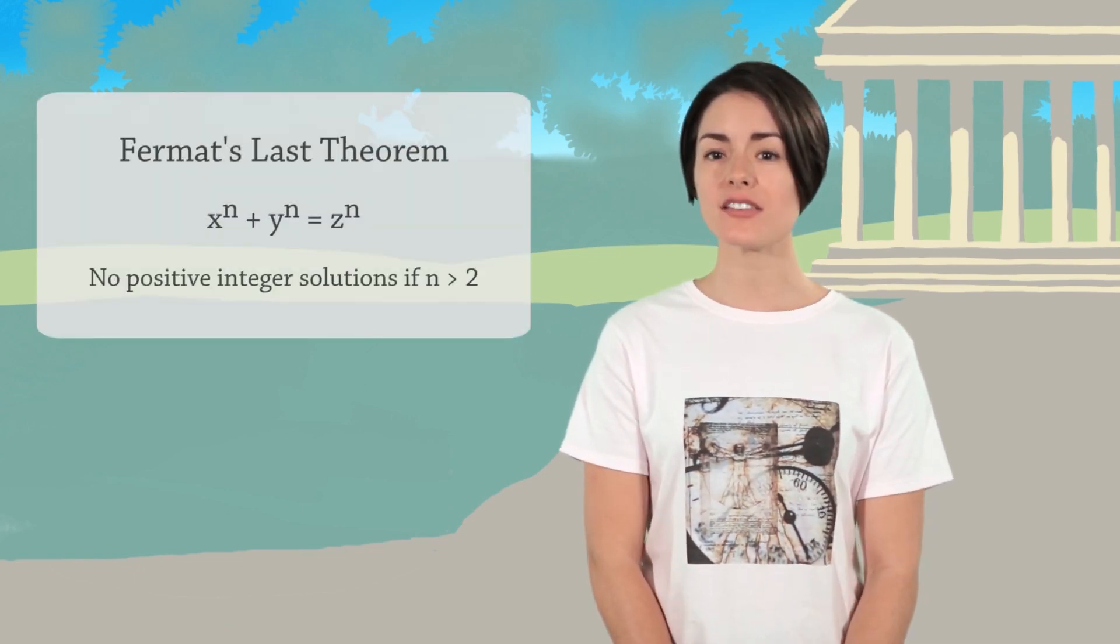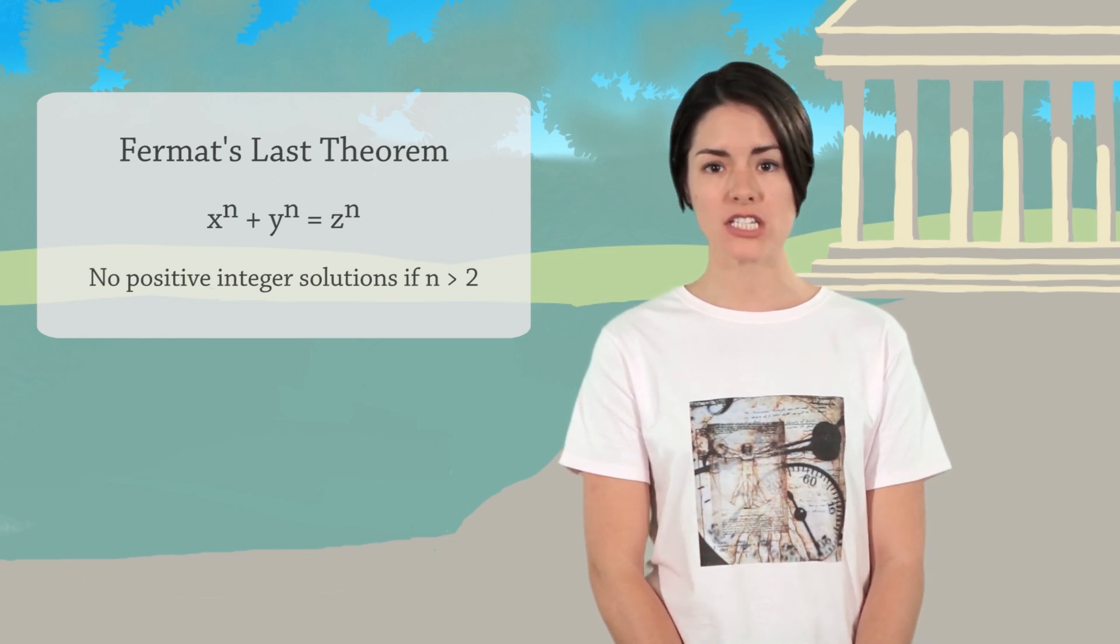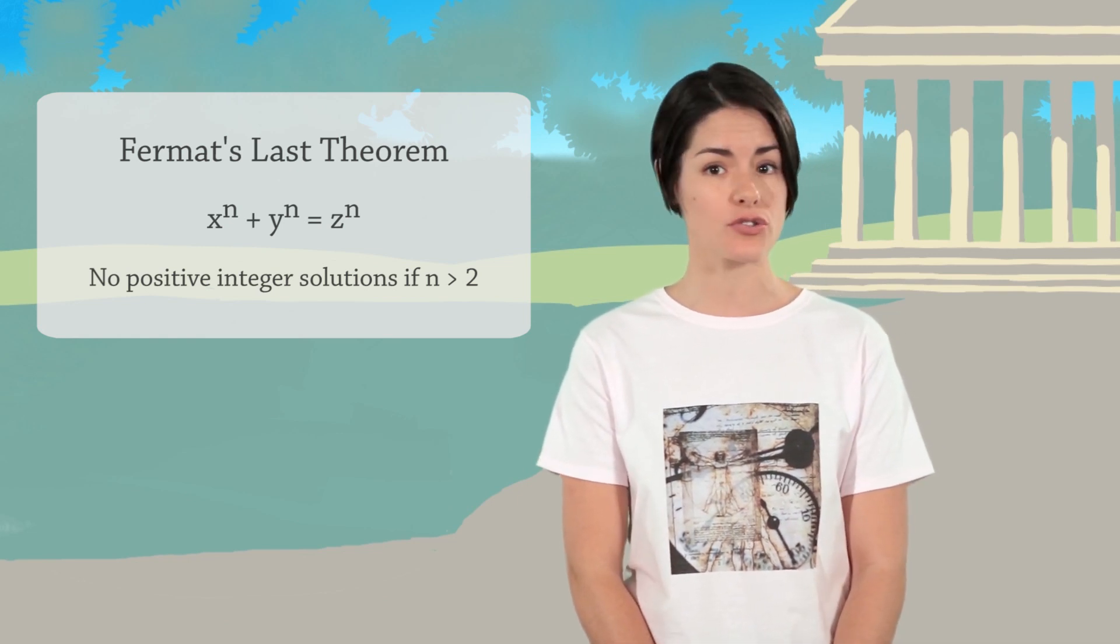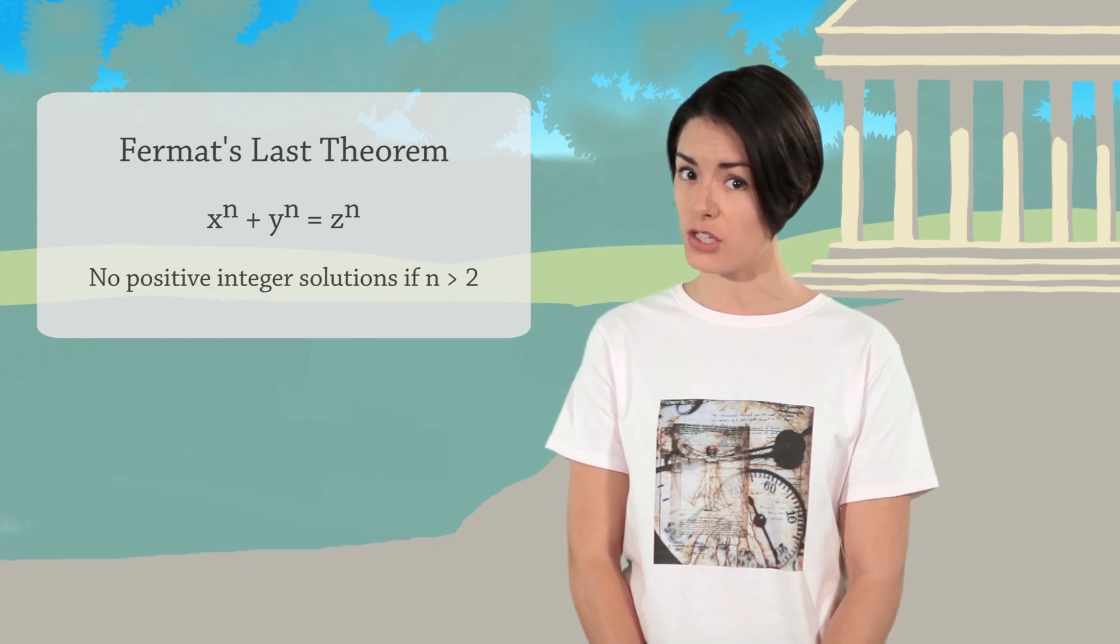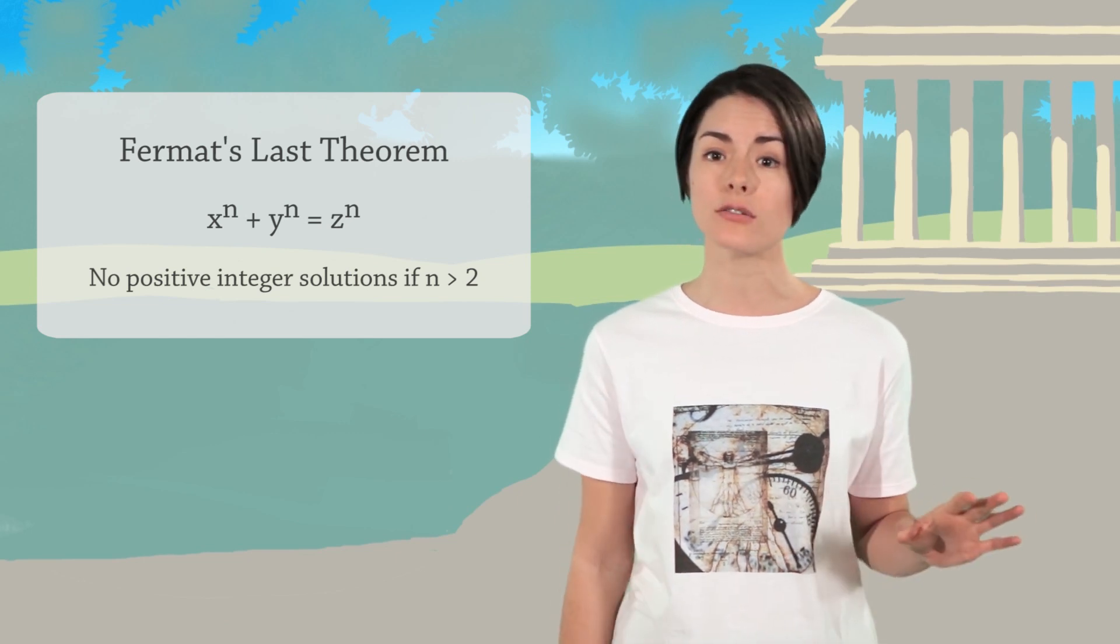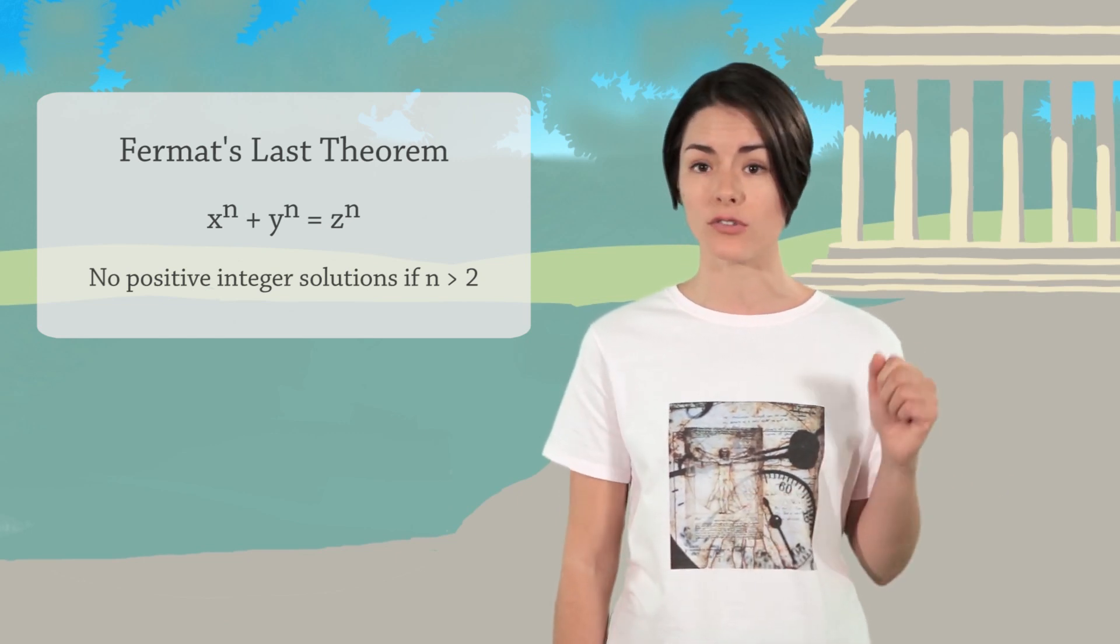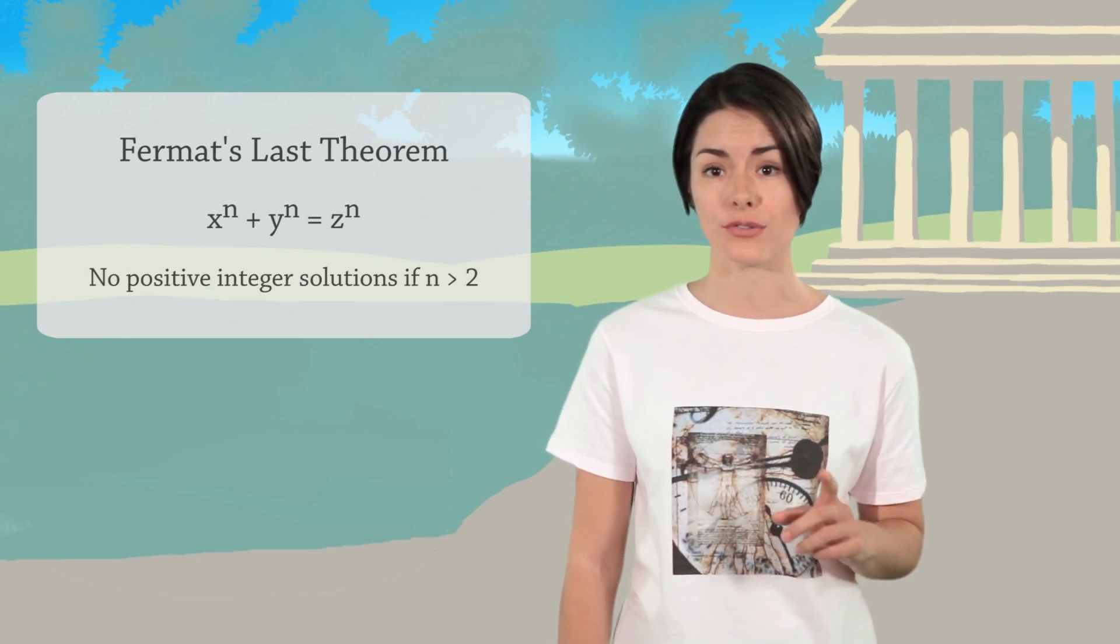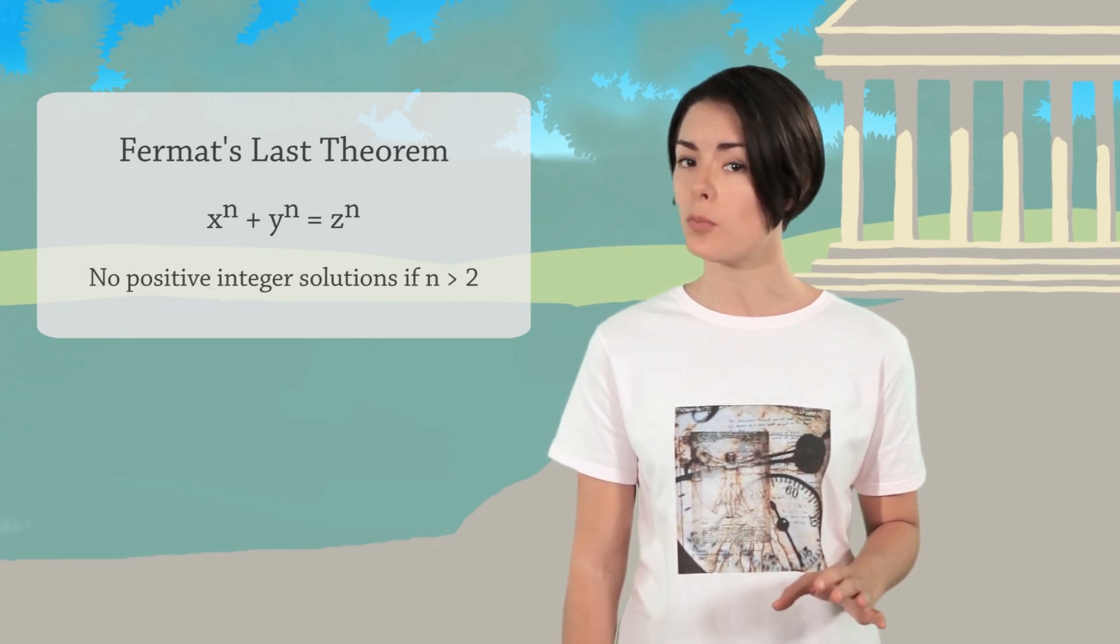He claimed that the equation x to the n plus y to the n equals z to the n had no positive integer solutions if n was greater than 2. There are infinitely many solutions when n equals 1 or n equals 2, but for n greater than 2, Fermat was certain there was no positive solution.